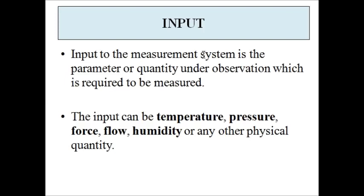The input to the measurement system is the physical parameter which we want to measure — whose value is unknown to us and we want to get the exact value of that physical parameter. The physical parameter can be temperature, pressure, force, flow, humidity, moisture, displacement, velocity, or light — it can be anything. We have to get the correct or exact value of the physical quantity here; that is the input.